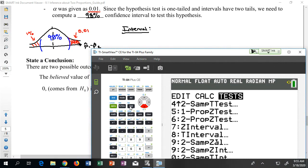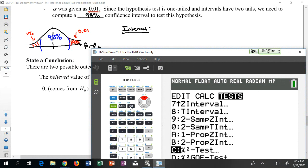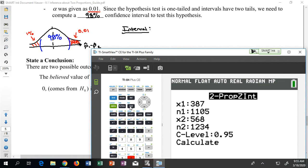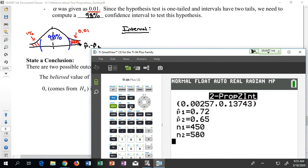If I do that on the calculator, a 2 prop Z interval. I don't want the test, I want the interval. So I might have to scroll around here for a while. There it is at option B. It's going to ask for all the same information. I had 324 out of 450, I had 377 out of 580, and I want a 98% confidence interval. When I calculate this, I get 0.0026, 0.1374.